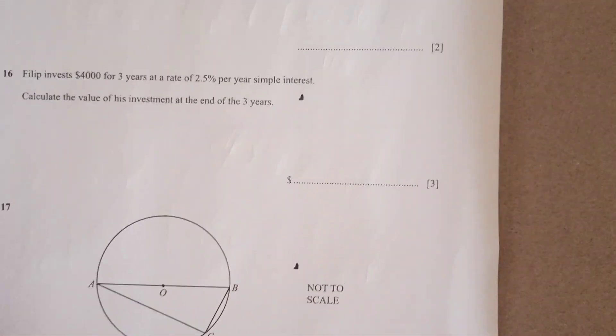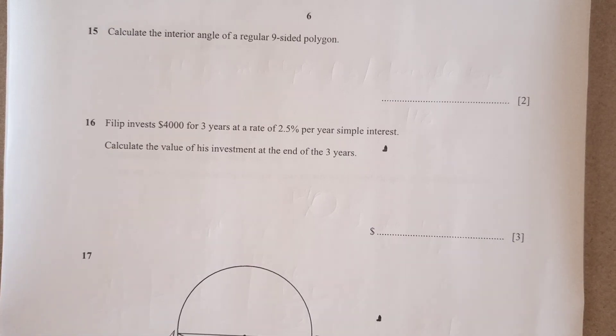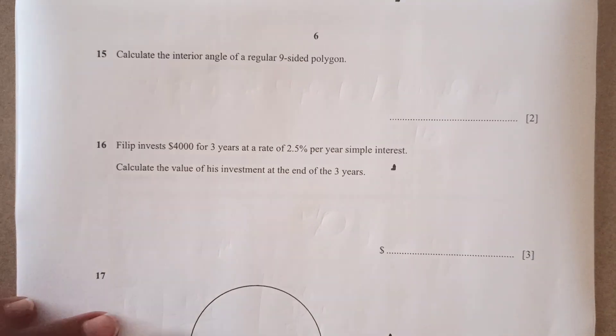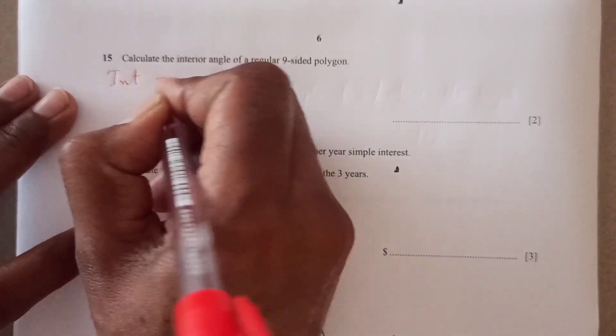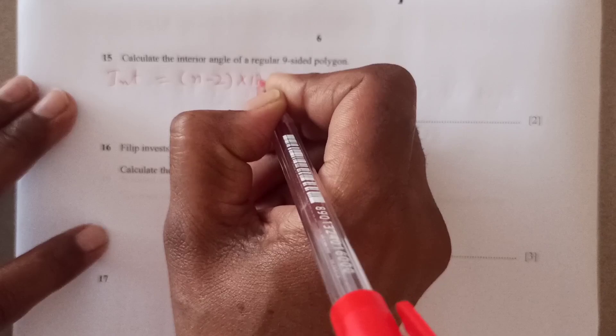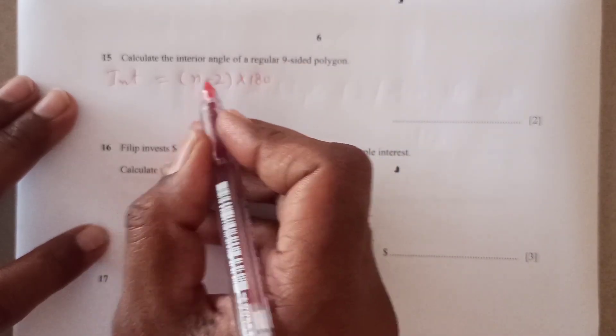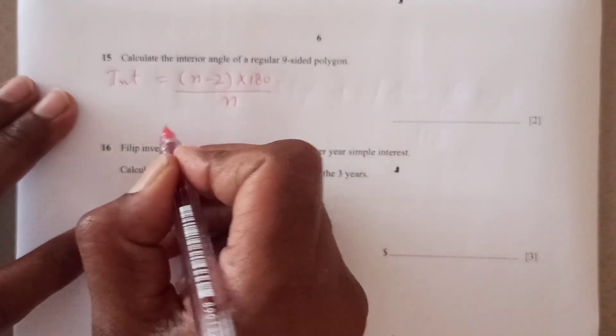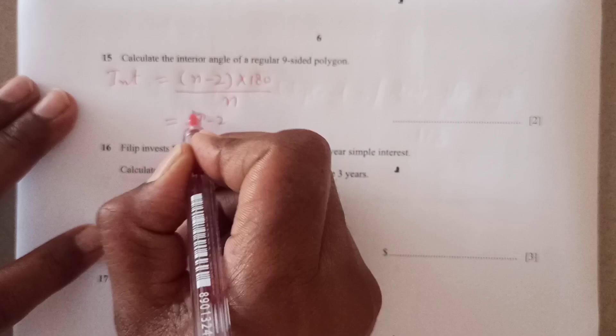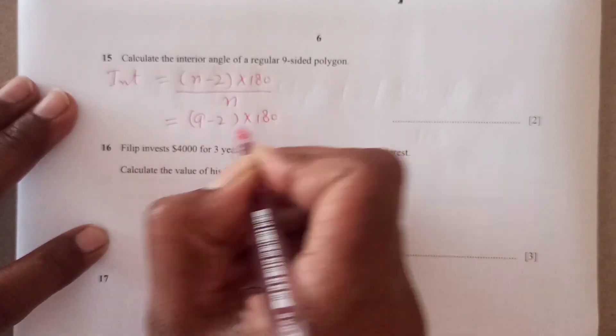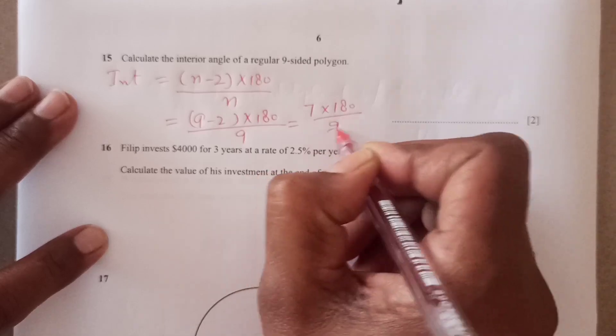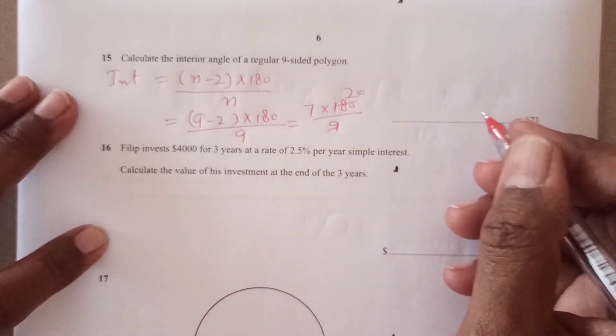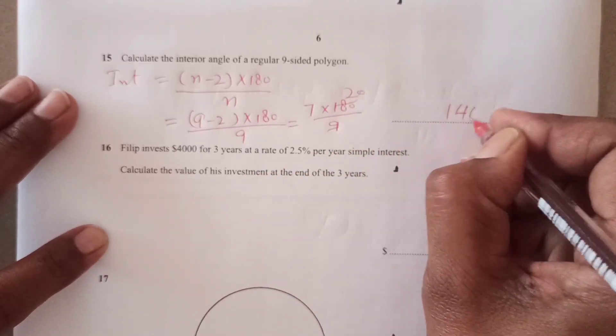Now question number 15, calculate the interior angle of nine sided polygon. Now interior angle is going to be n minus 2 times 180 divided by n. Again, n is 9 minus 2 times 180 divided by 9. This is 7 times 180 over 9. So 140 degrees, right?